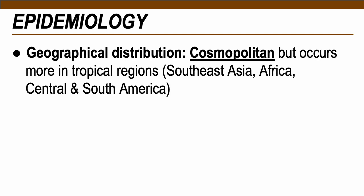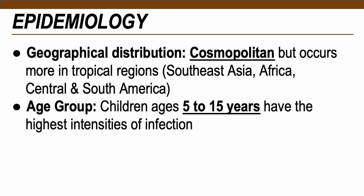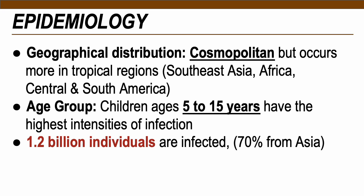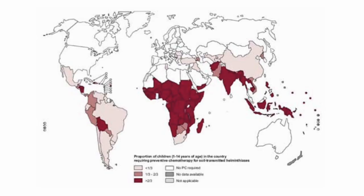Ascaris lumbricoides has a cosmopolitan distribution with cases occurring more in tropical regions of Southeast Asia, Africa, Central and South America. The most affected age group is children 5–15 years old, who have the highest intensity of infection due to lack of education. Worldwide, 1.2 billion individuals are infected, with 70% from Asia and 2,000 deaths annually, with cases concentrated in tropical countries due to increased humidity and appropriate temperature.